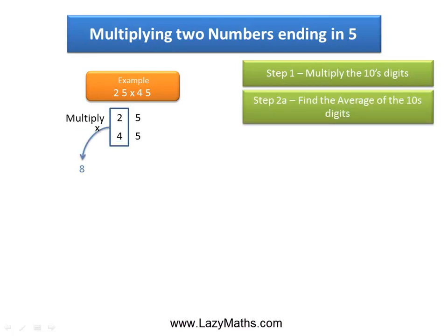The next step is to find the average of 2 and 4. As you can see, the average value of 2 and 4 will be 3. Here's how you calculate the average: you add 2 plus 4 to get 6, then divide the 6 by 2 and you get 3.